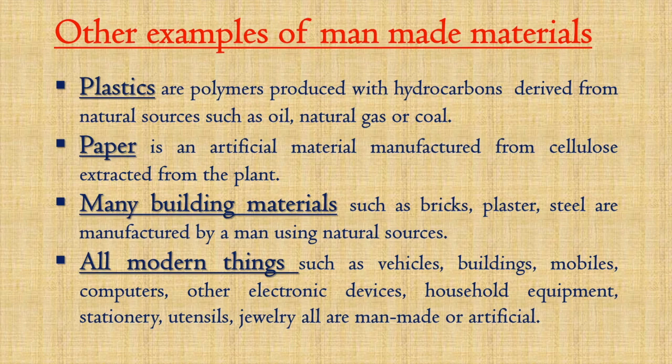All modern things such as vehicles, buildings, mobiles, computers, other electronic devices, household equipment, stationery, utensils, and jewelry are all man-made or artificial. So this is all about natural and man-made materials.